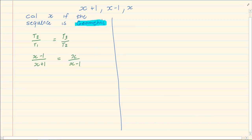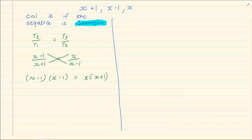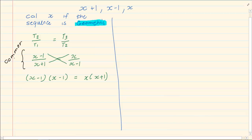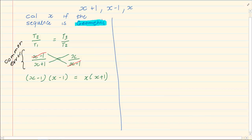Now we use algebra to solve — you cross multiply. So we have (x minus 1)(x minus 1) is equal to x(x plus 1). This step where we cross multiply is a common error. If you are not familiar with this concept, or if you had immediately cancelled terms, then you need to go and look at our video where we discussed common errors under fractions.